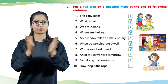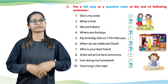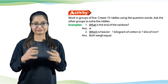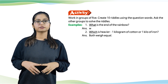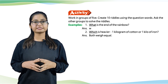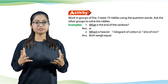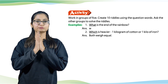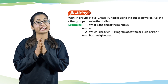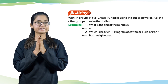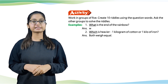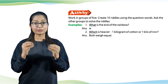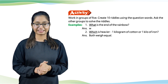Number 10 continued: How long is the rope? Don't forget to put a question mark to make it a successful question. Now, as an interesting activity to conclude this chapter: walk in groups of five, create ten riddles using question words, and ask the other groups to solve the riddles. Example: What is the end of the rainbow? Answer: W. Complete this activity by yourself. Bye bye — I will meet you in the next lecture. Don't forget to revise and enjoy. Thank you very much!